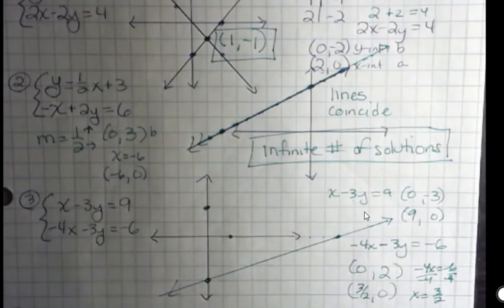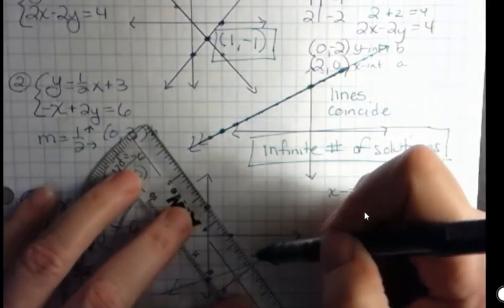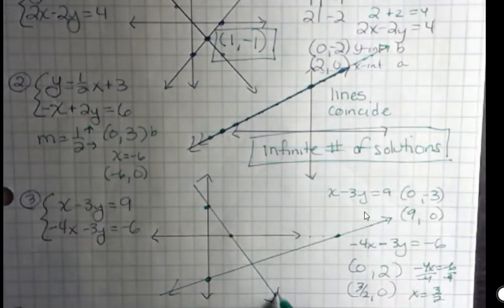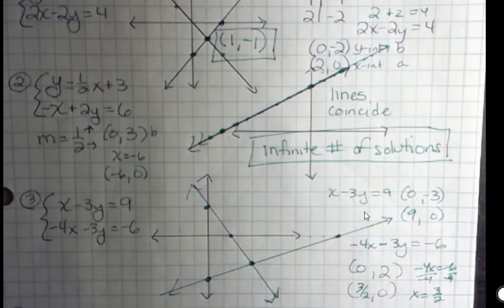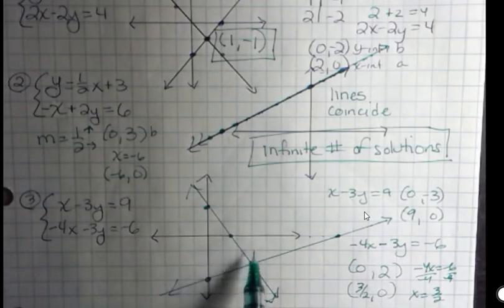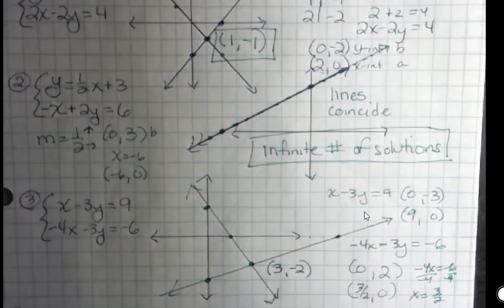And this one looks like I'm going to have a point of intersection as well. So there's my graph. Here looks like my point of intersection. And that looks like 1, 2, 3, and then negative 2.